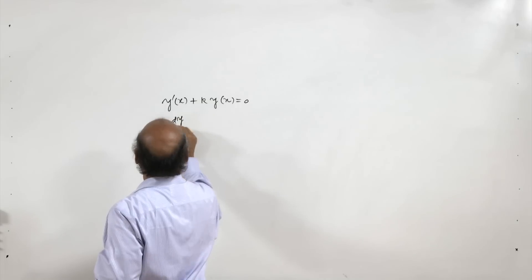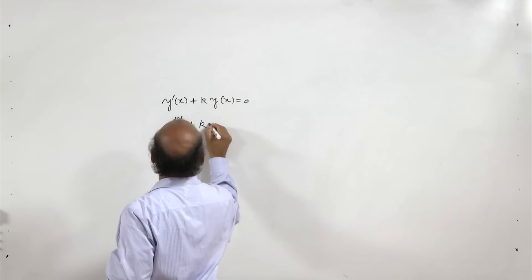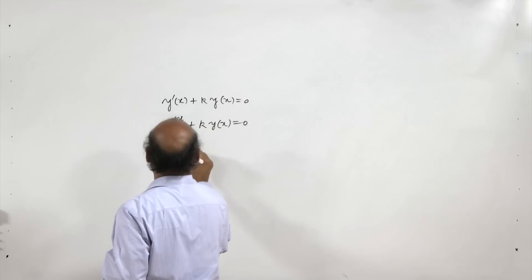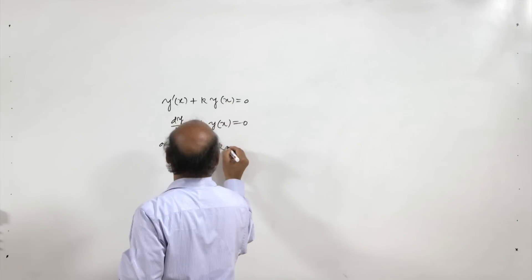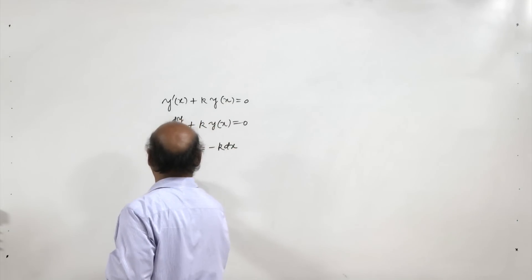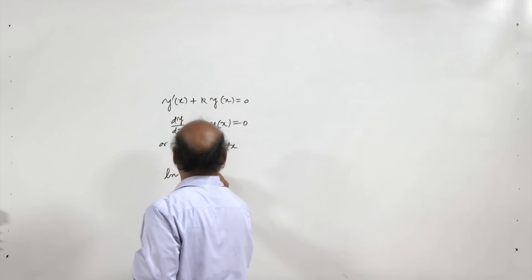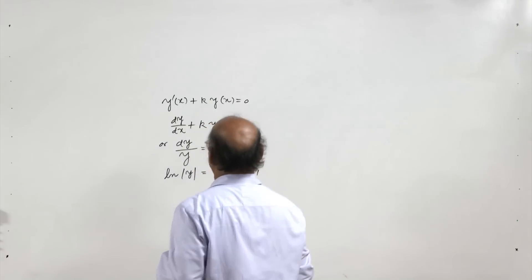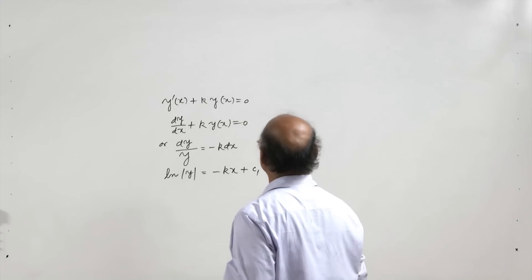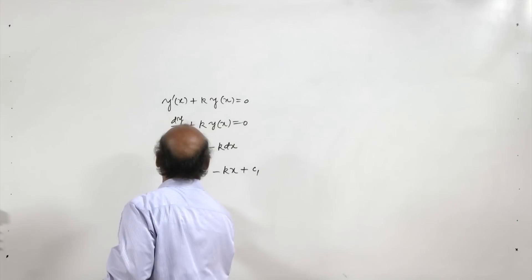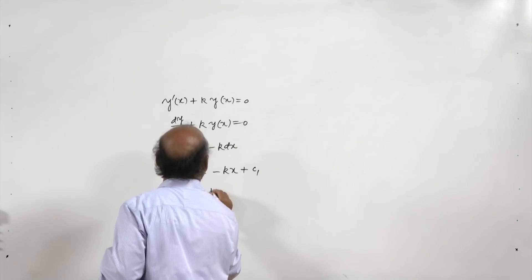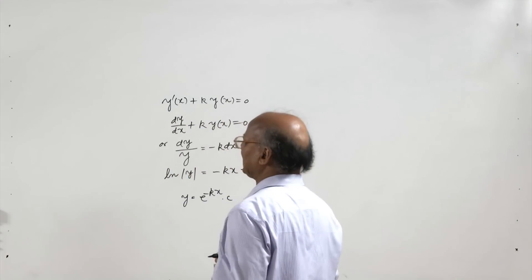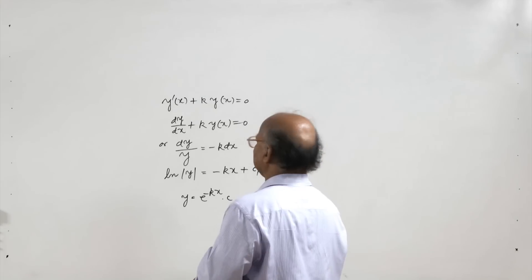Integrating both sides, we can write ln|y| = −kx + c₁, or y = e^(−kx) · C. So y = C·e^(−kx), where C is an arbitrary constant.